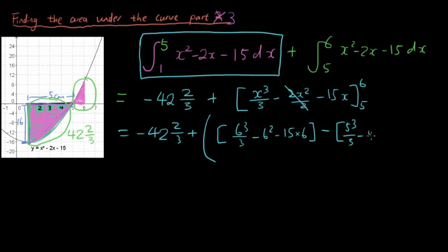6³/3 - 6² - 15 times 6, minus 5³/3 - 5² - 15 times 5. And putting all of this into the calculator, we have...